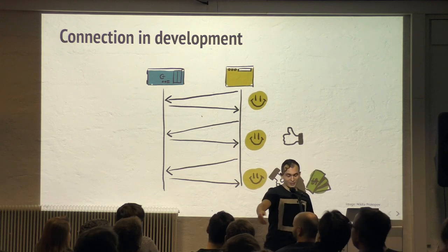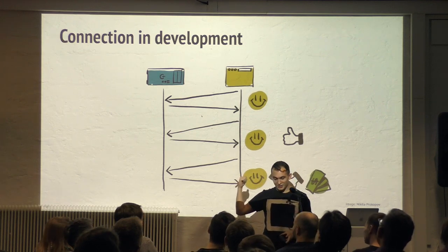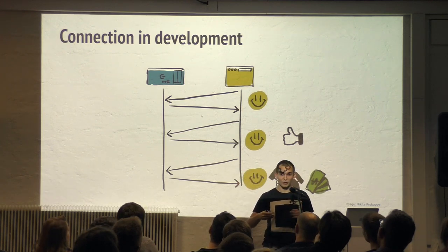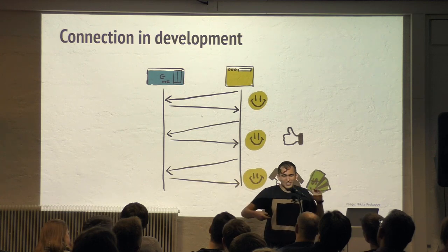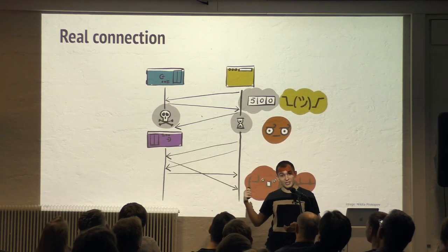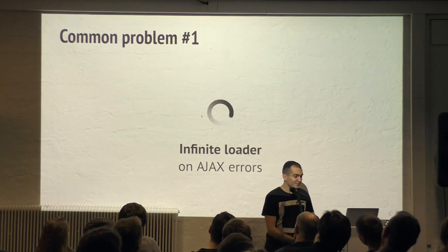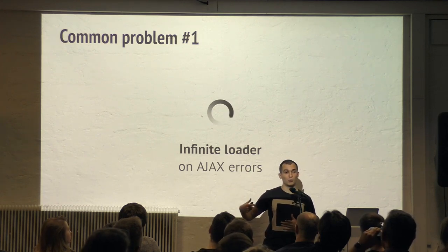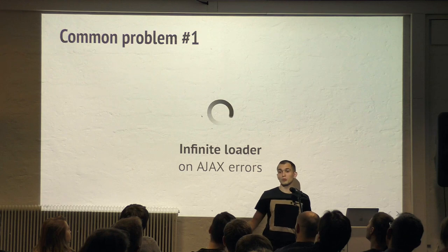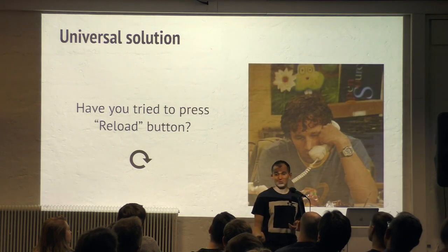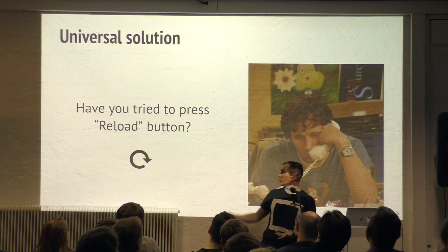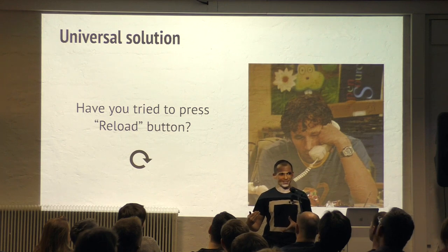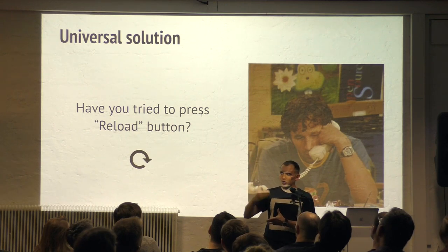This is a slide from Nikita — he's the best. We're creating websites based on our local internet from local client to local server, and it's perfect internet. But unfortunately, real internet looks like this, and nobody cares about it. So we have a first problem: if we make an AJAX request and we have an error in the middle of the request, nobody will care. Usually you'll see an infinite loader. Every user right now has a rule: press the reload button if you have any problem with a web page. It's not a stable web system.